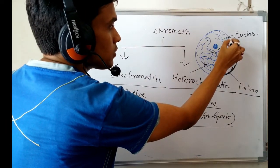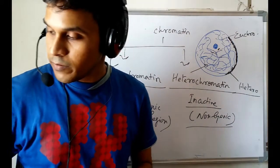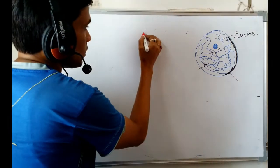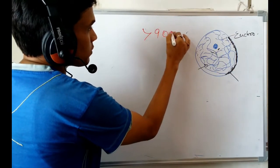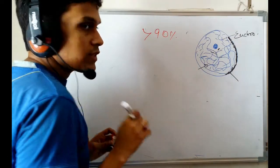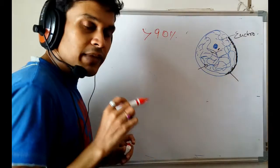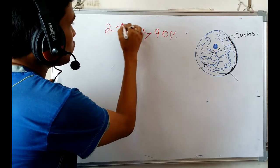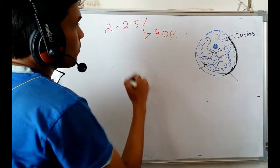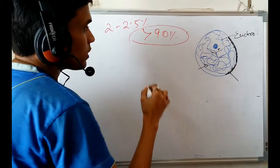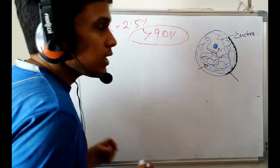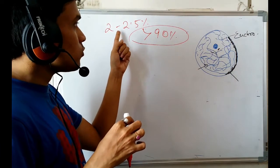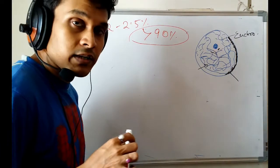Now, there may be one confusion: I have told that the genic part of DNA is only 2 to 2.5 percent, but now I am telling that 90 percent of the region is the euchromatic region where the genic part is present. So how is that possible — 2.5 percent genic DNA but 90 percent euchromatic region?